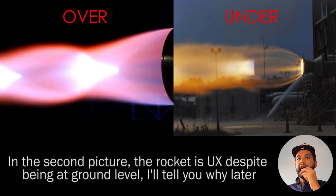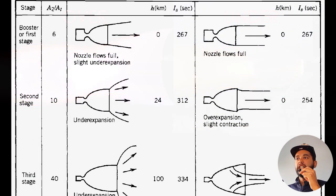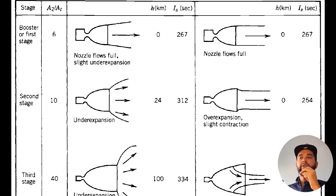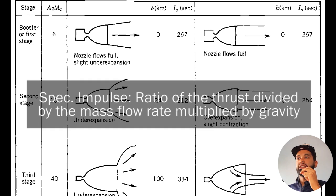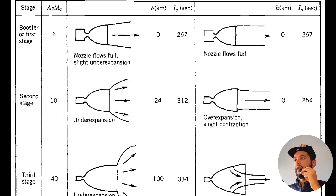Expansion waves are not as bad as oblique shocks because they don't create as much drag force. You can also see in this picture that underexpanded nozzles produce a much higher specific impulse than overexpanded nozzles. Specific impulse is a ratio of the force divided by how much fuel is leaving the rocket engine every second, also known as the mass flow rate, with units of kilograms per second or pounds per second.